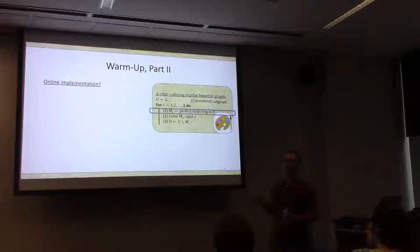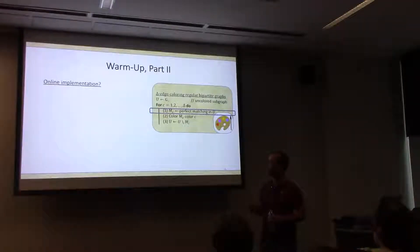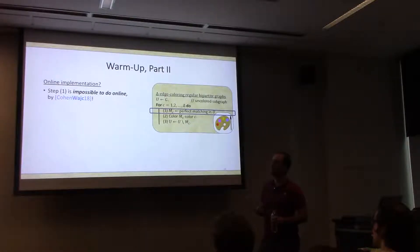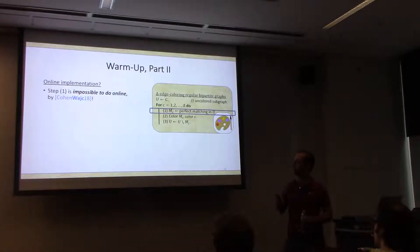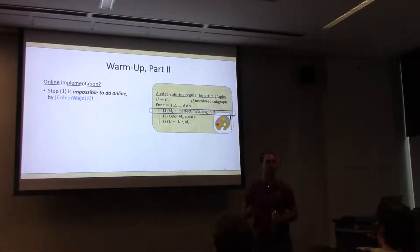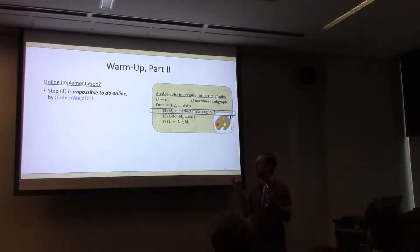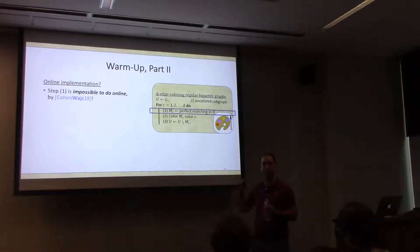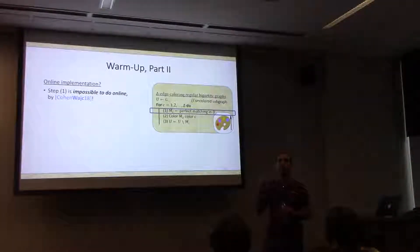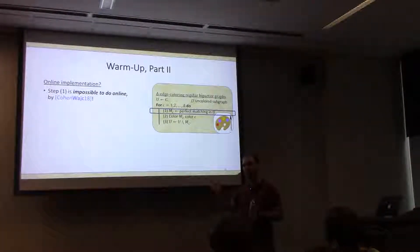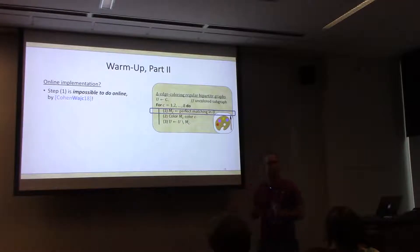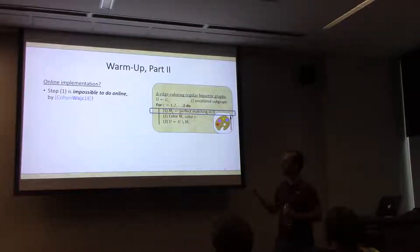What about an online implementation? By previous work with Ilan at SODA last year, computing a perfect matching or maximum matching is impossible in the online vertex arrival model, even for regular graphs. But maybe we can do something similar. This algorithm decreases the max degree by one per color, so can we do something nearly as good online, also for non-regular graphs?